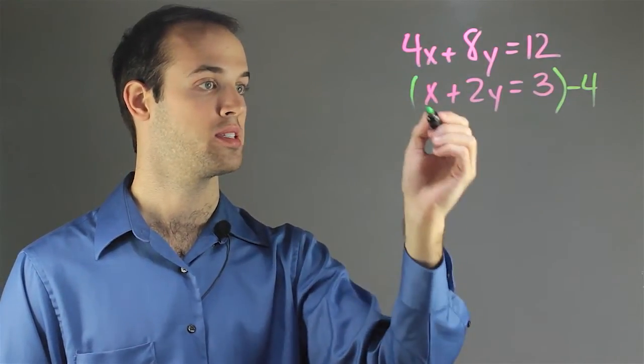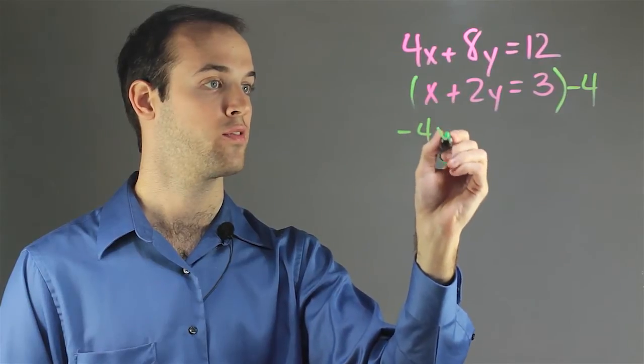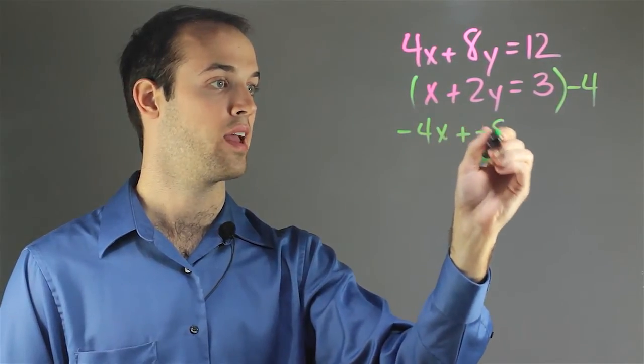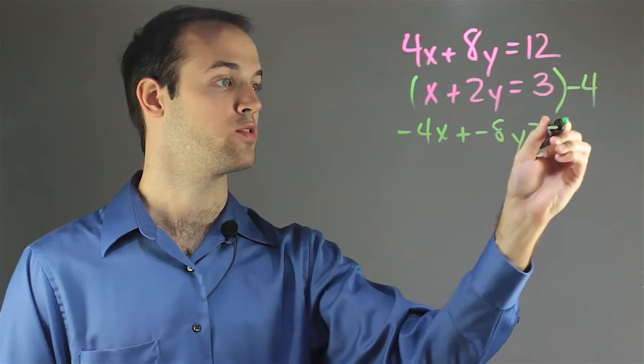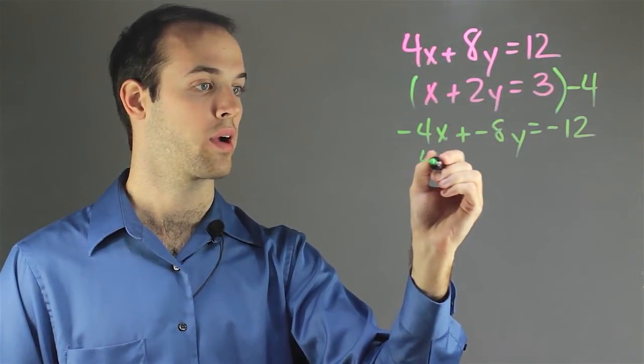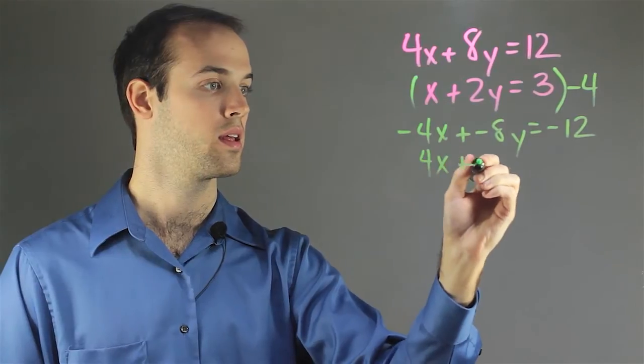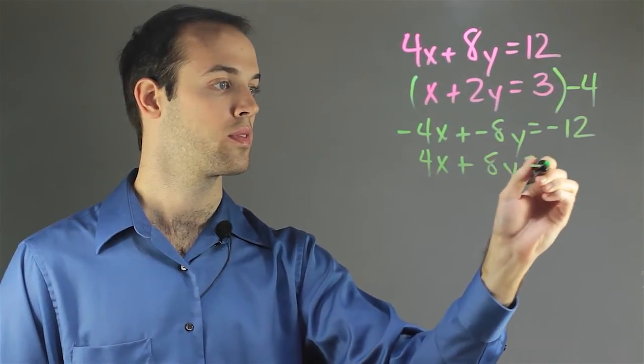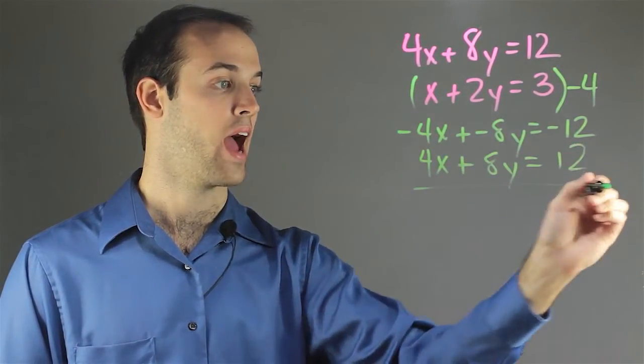So if I distribute this negative 4 all the way through, I'm going to have negative 4x plus negative 8y equals negative 12, and I'm going to copy the first equation down directly underneath in preparation to add them together.